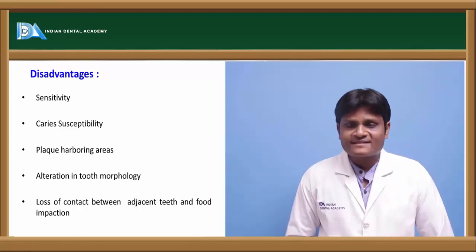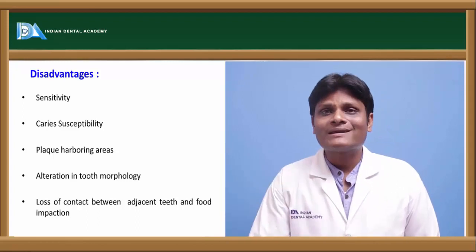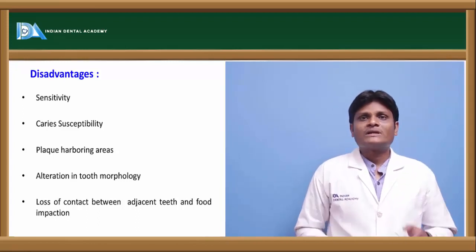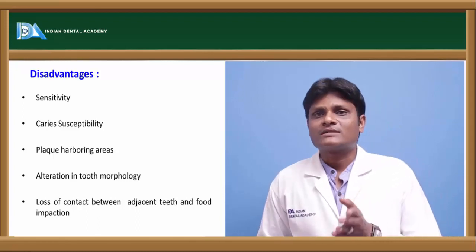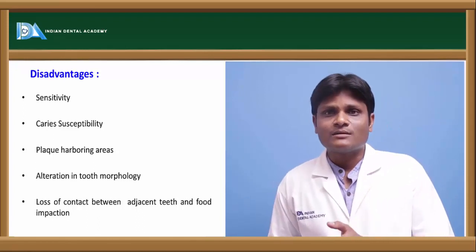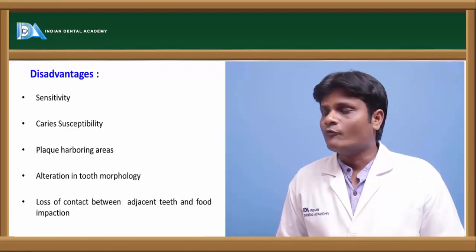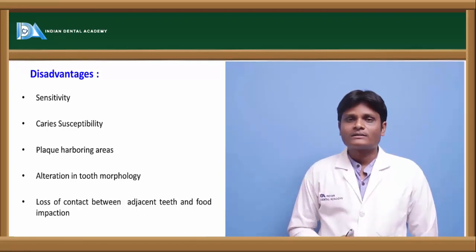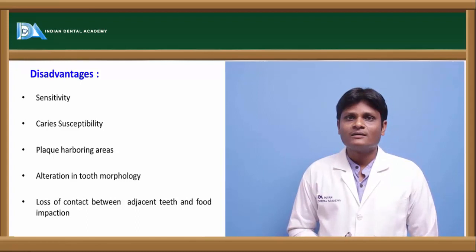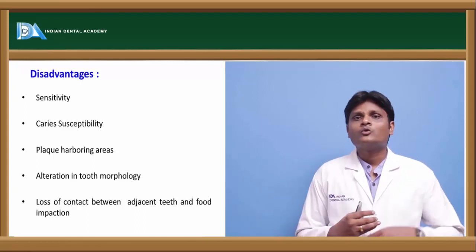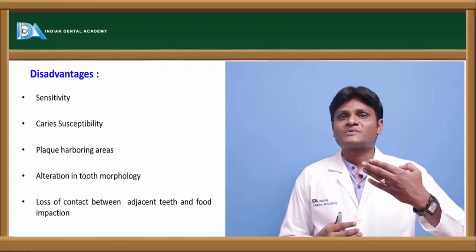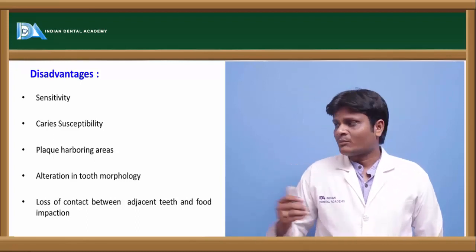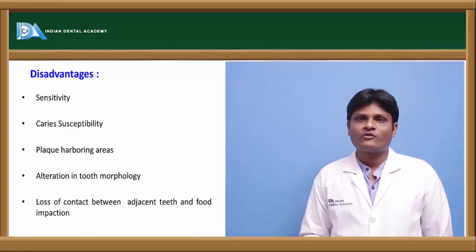Caries susceptibility will be greater in cases where we do proximal stripping, because stripping creates a roughened surface which acts as a plaque-harboring area and accumulates food, eventually leading to increased susceptibility to carious lesions.